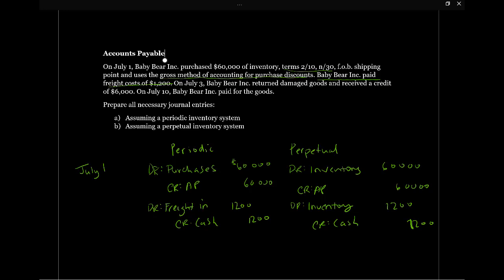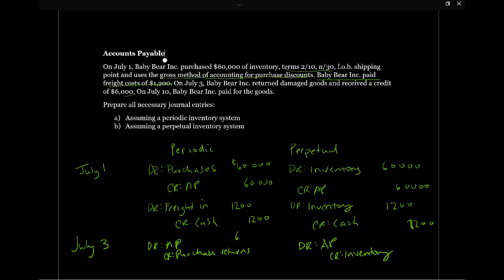On July 3rd, Baby Bear returns damaged goods and receives a credit of $6,000. We know we're going to debit accounts payable because we're decreasing the amount we owe. That's the same in both systems. In the periodic system, we credit purchase returns. In the perpetual system, we credit inventory, because we need to remove the capitalized amount from inventory on the balance sheet. The amount is $6,000.